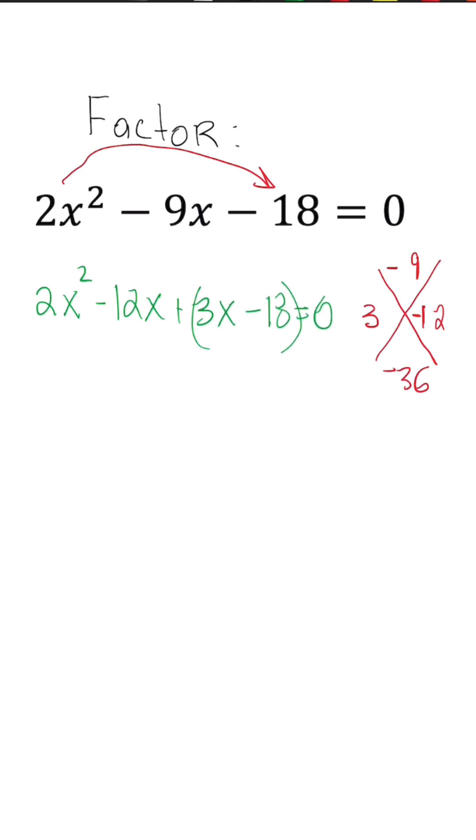Now we're going to just group our terms and factor. So I take out a 2x for the first set, we're left with x minus 6, and in the second set of parentheses, we're going to take out a 3 and we're left with x minus 6 again is equal to 0.